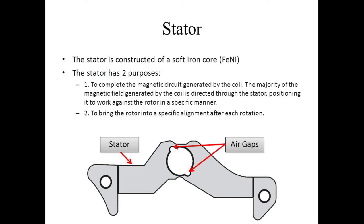The stator is constructed of a soft iron core. The stator has two purposes: one, to complete the magnetic circuit generated by the coil—the majority of the magnetic field generated by the coil is directed through the stator, positioning it to work against the rotor in a specific manner; two, to bring the rotor into a specific alignment after each rotation.